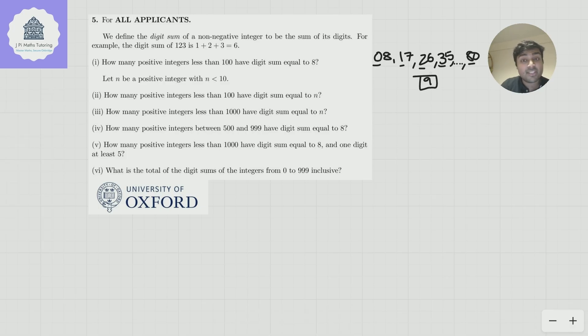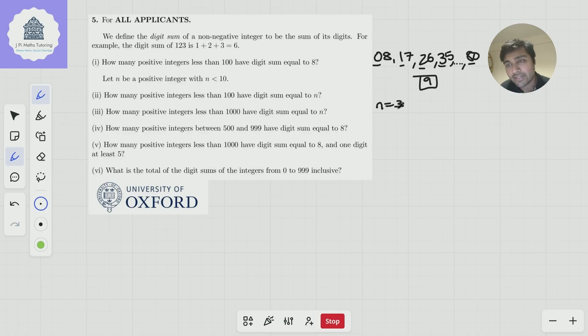Part two: let n be a positive integer with n less than 10. How many positive integers are there less than 100 with digit sum equal to n? Okay, so we've just answered the case when n is 8, and the answer was 9. Let's just try another value of n, just a random value. Let's try n is 3, a smaller value. Well, how many have digit sum equal to 3? Well, it's 03, 12, 21, 30. And that's it. That's all we can kind of do.